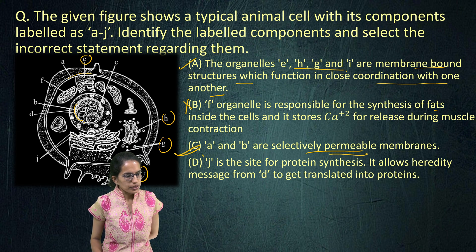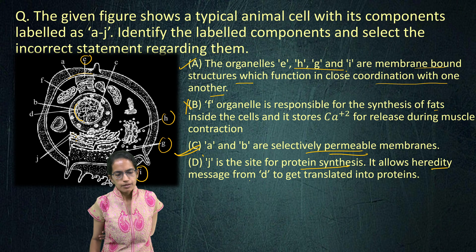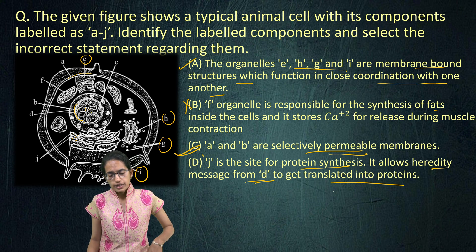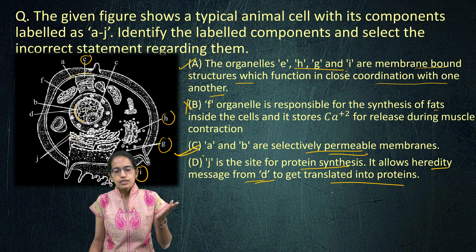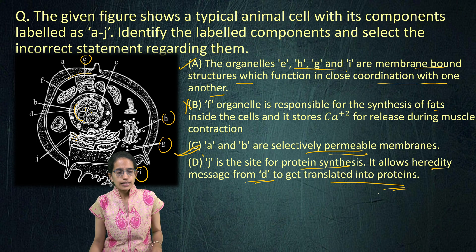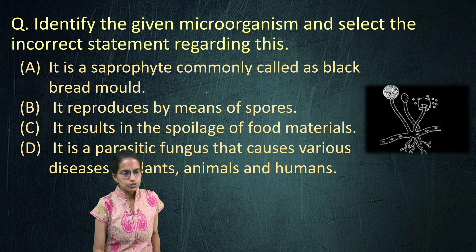J is the site for protein synthesis. These are the structures on the endoplasmic reticulum responsible for protein synthesis — the ribosomes — and it allows the hereditary message from D to get translated into protein. D is the chromatin network; you have the DNA and that helps translate the message into protein. Therefore the role of ribosome is important, and B is the only incorrect option present.